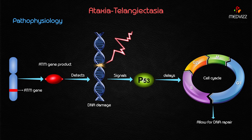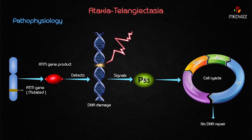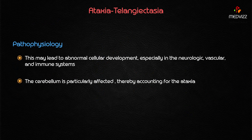After detecting the DNA damage, the ATM gene product signals p53 to delay the cell cycle and allow time for DNA repair. If the ATM gene is mutated, p53 is not activated, the cell cycle continues without DNA repair, allowing replication of the damaged DNA itself. This leads to abnormal cellular development, especially in the neurologic, vascular, and immune systems.